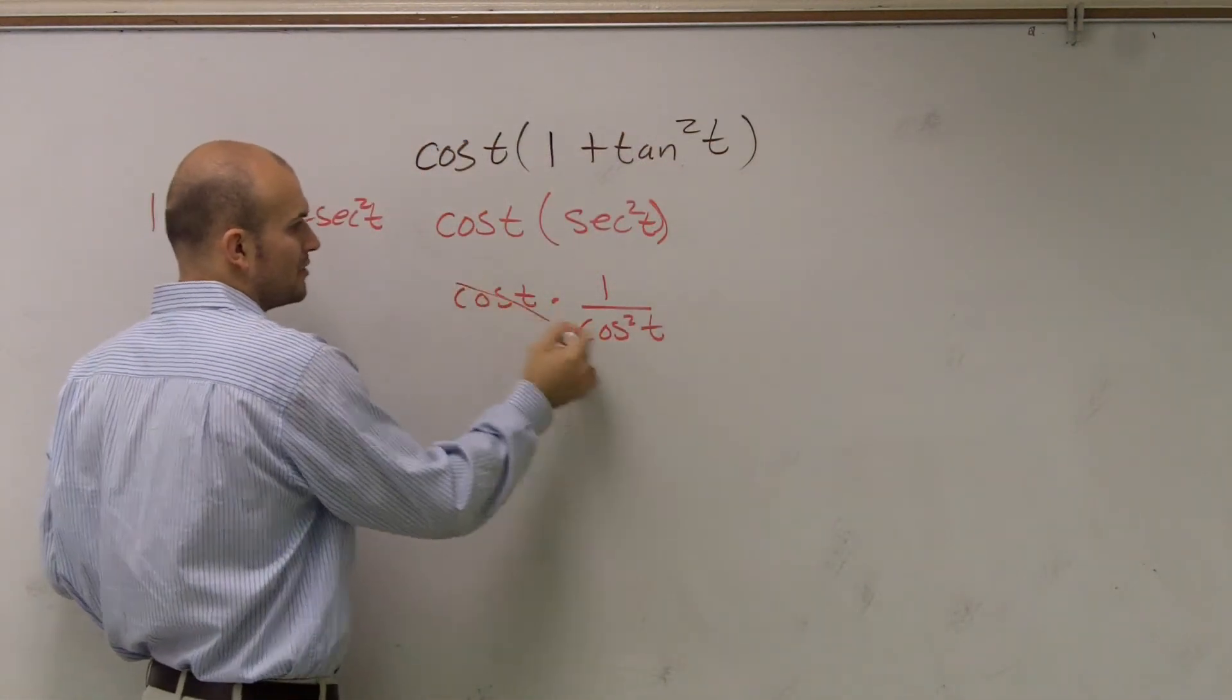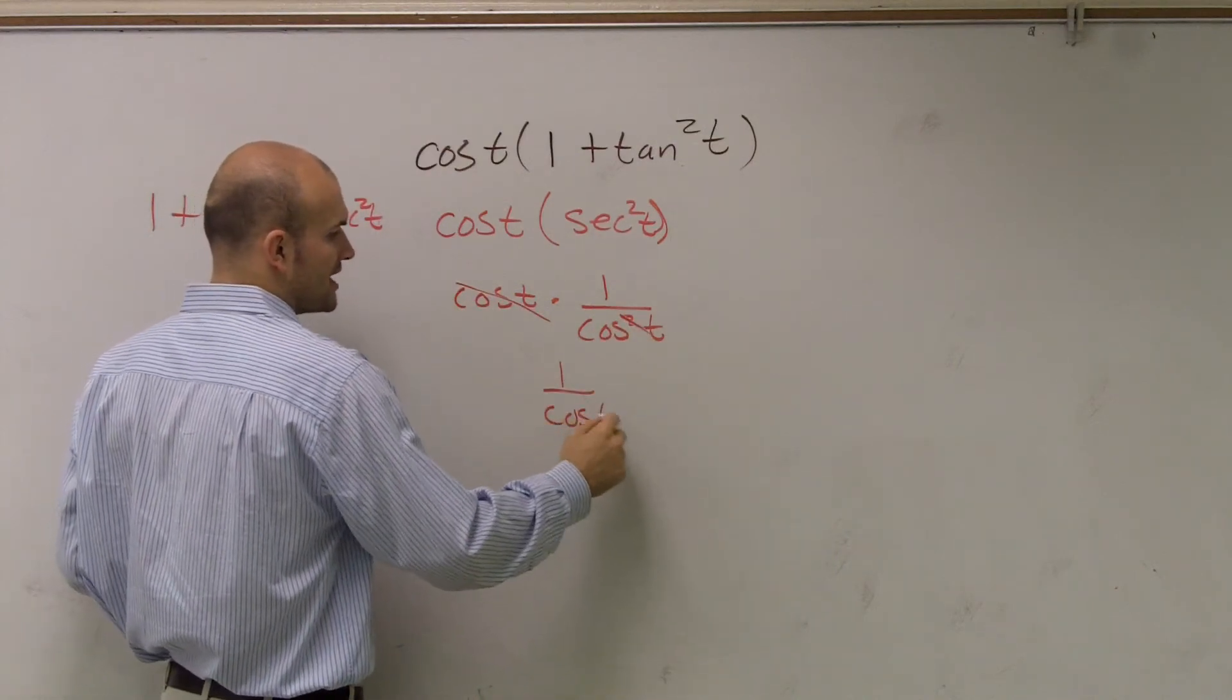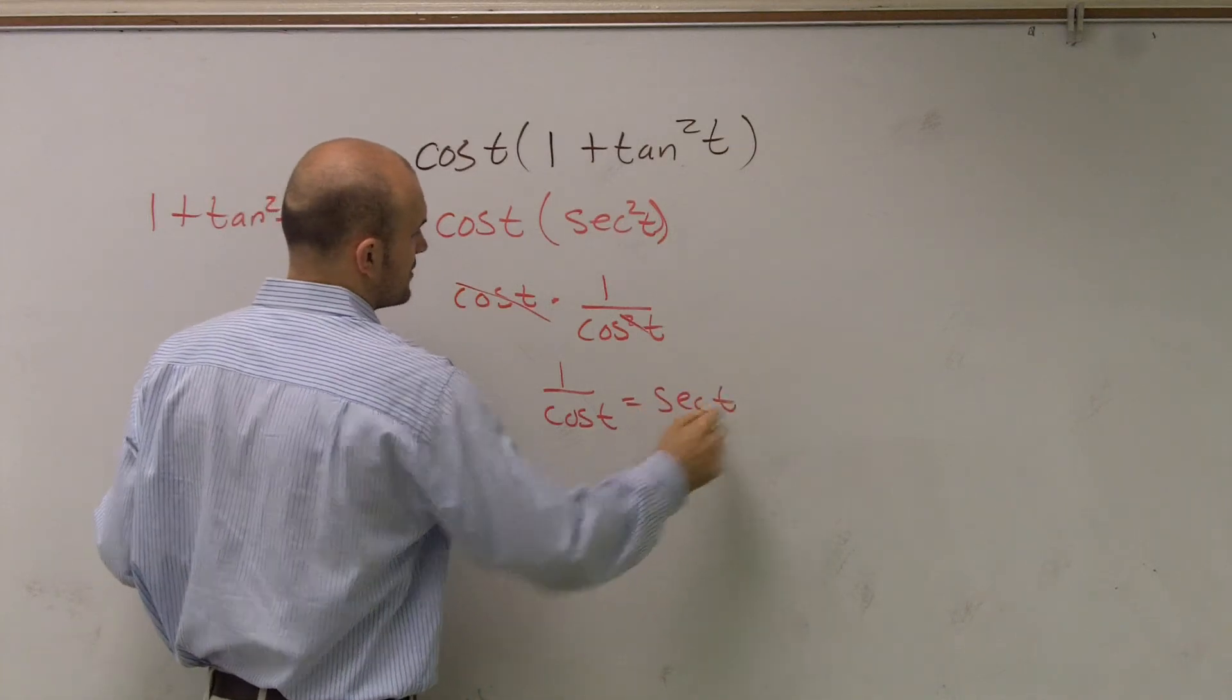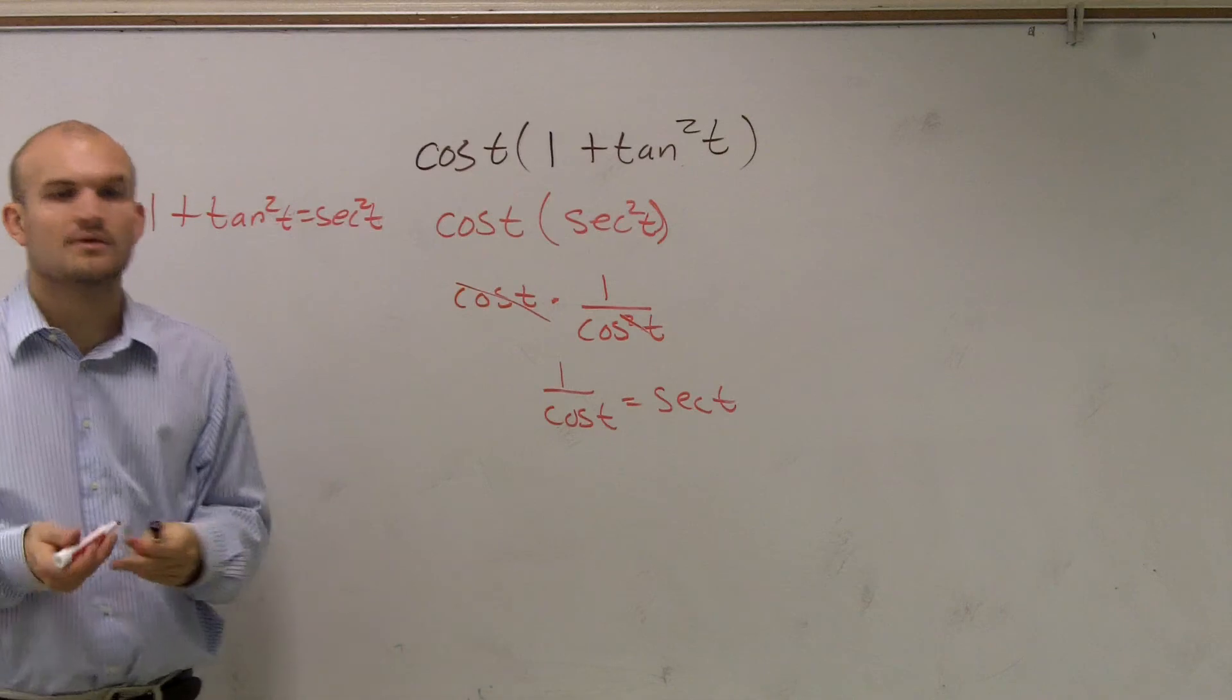And then what you notice is then that will cancel out and that will cancel out. And you're just left with 1 over cosine of t, which equals secant of t. And yes, if you just wanted to write this as 1 over secant and then cancel them out, that would work as well.